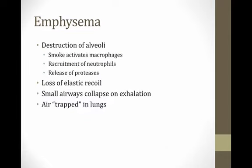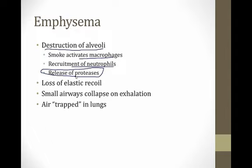In emphysema, you get destruction of the alveoli. In the more common smokers' type, smoke activates macrophages, leading to recruitment of neutrophils and production of proteases that overwhelm the antiproteases. When you lose alveoli, you lose the elastic recoil of the lungs, and this is what leads to obstruction. This causes the small airways to collapse when you exhale, and air gets trapped in the lungs.